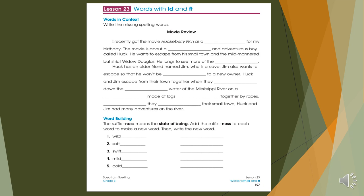The second exercise is asking you the suffix. Suffix-ness in N-E-S-S means the state of being. Add the suffix-ness to each word to make a new word. Then write the new word. So you just add-ness to the end of the words in order to change it to a noun. And you are going to write the words with-ness in the second blanks.